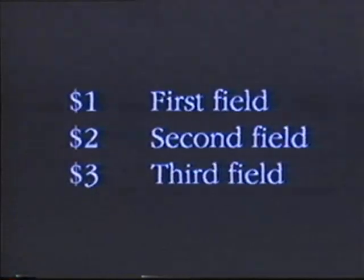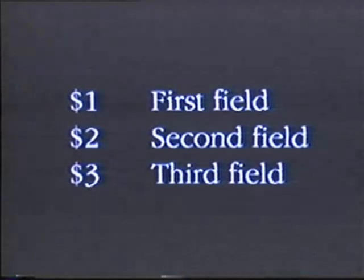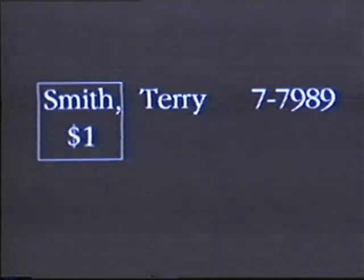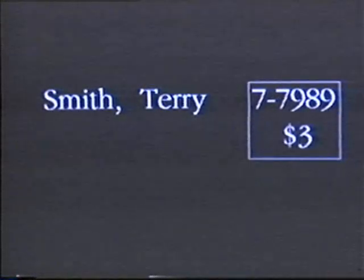What gives awk its formatting power is its ability to reference individual words on a printed line. Each field on a line is identified by a separate awk symbol. In awk's terminology, a field is any set of characters offset with spaces or tabs. $1 identifies the first field on a line, $2 represents the second field, and $3 represents the third field. In the phone list, $1 would be the last name and a comma, $2 would be the first name, and $3 would be the phone number.